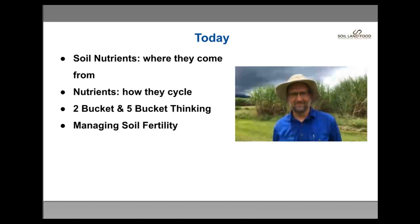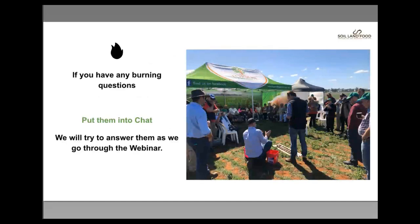We'll try to see nutrient cycling as a holistic system through five-bucket thinking. Finally, we'll cover what I call the five steps to success when managing soil fertility. It's easy to spend a lot of money on fertilisers or making efforts to improve fertility, but there are five steps to follow that I feel will lead you in the right direction. Please feel free to punch questions into the chat and we'll pause to cover them if they're really directly pertinent as we go through.